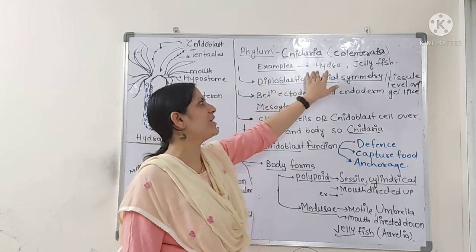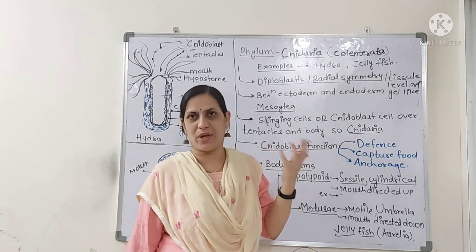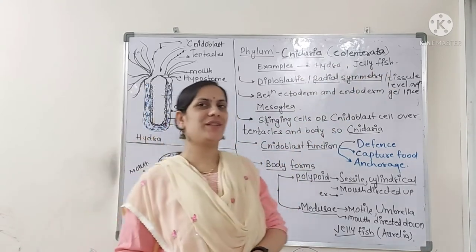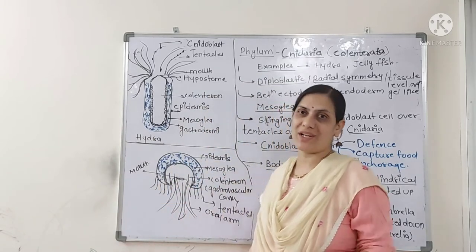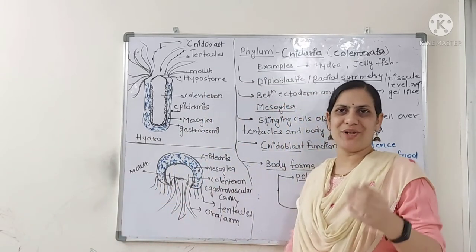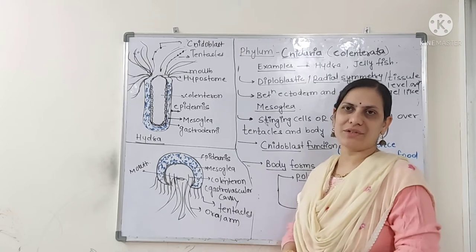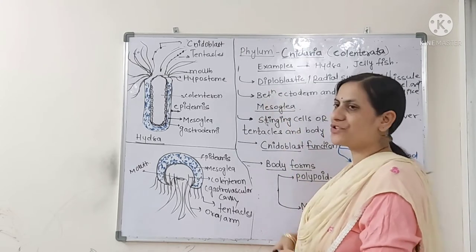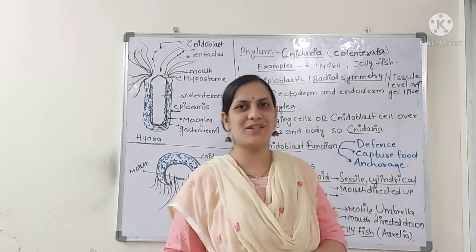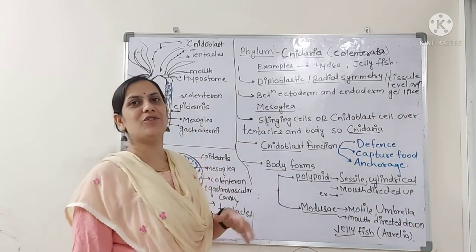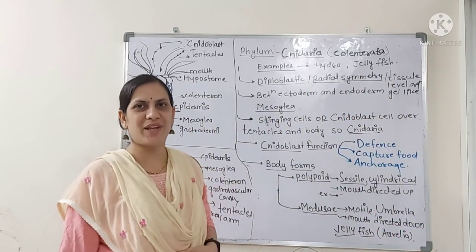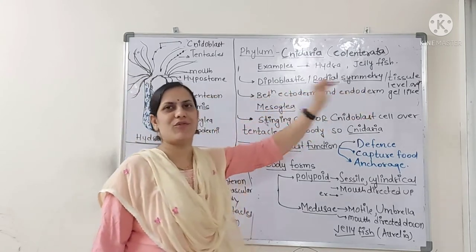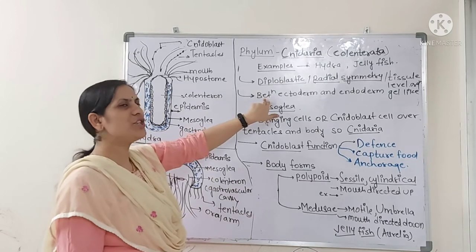The major examples of this particular phylum are hydra and jellyfish. These are diploblastic animals with radial symmetry. Recall the formula: all diploblastic animals have radial symmetry. They are having tissue level of organization.